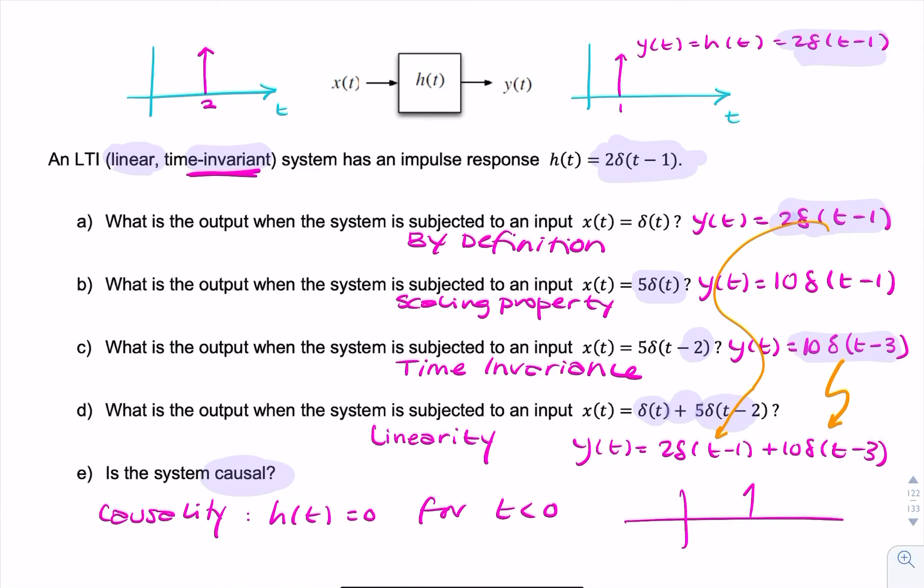And that is zero for t less than zero. So for this side of the time axis, it's zero. Therefore the system is causal.